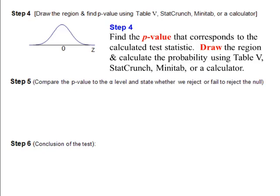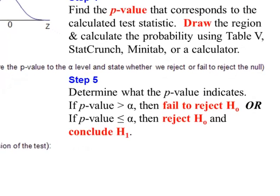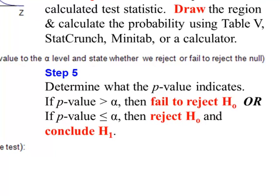Step number five, the P value helps determine the outcome of the hypothesis test. If the P value is greater than alpha, we fail to reject the null. If the P value is less than or equal to alpha, then we reject H0, the null, and we conclude H1, the alternative.